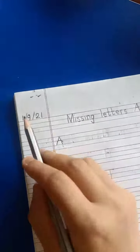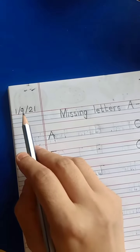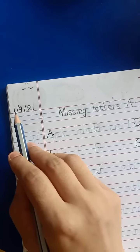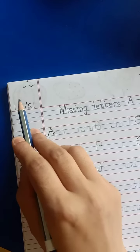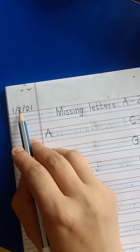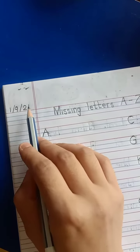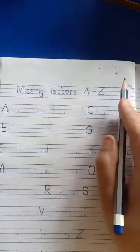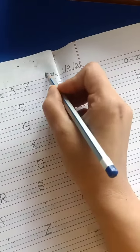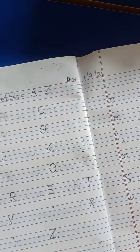First of all, write down the date on left side of the page. Today is the 1st of September. So write down 1, slanting line. September is the 9th month of the year, so write down 9, slanting line, in the year 2021, and homework on right side of the page.